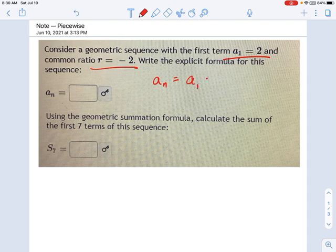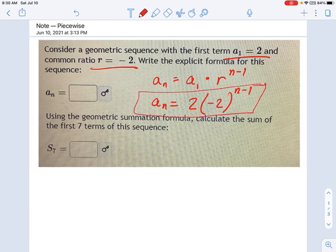it's aₙ equals a₁ times r to the n minus 1. So all you do is you just plug everything in. This becomes 2 times r is negative 2, and I like to put parentheses around these things just to keep it real clear. If you're going to plug it into a calculator, calculators get confused easily, so I like to make my parentheses clear.